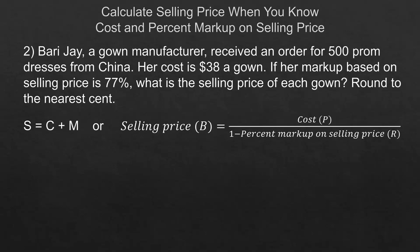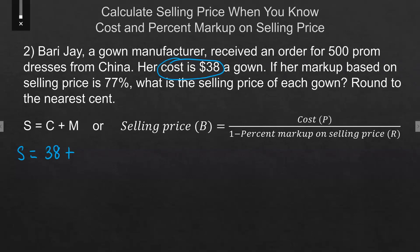I'm giving you both the formula and the equation. Your book sometimes tells you to check your answer using the formula. We're going to set this up with the equation first. We know the cost is $38, and we know that the markup is based on the selling price at 77% — that's 77% of the selling price that we don't know.